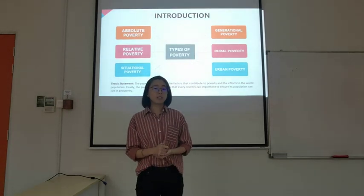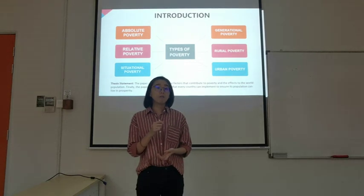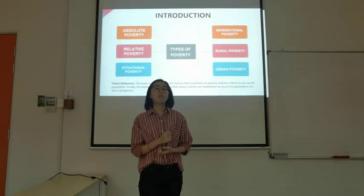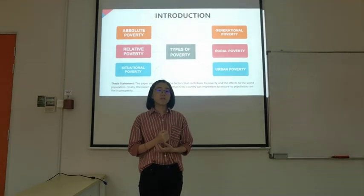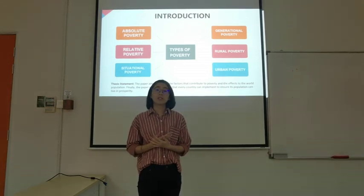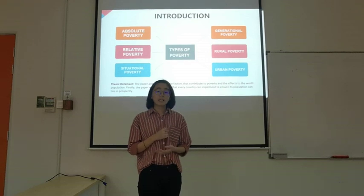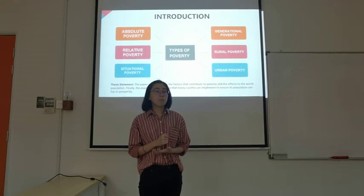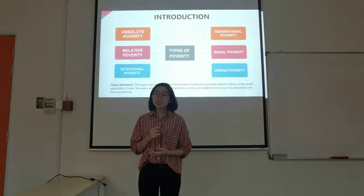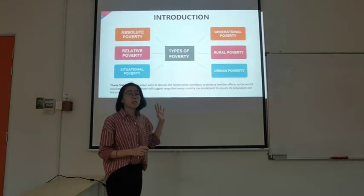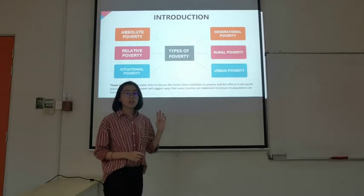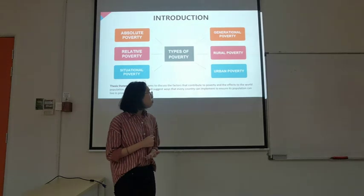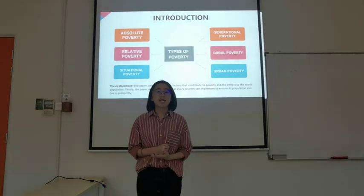Absolute poverty is not common in developed countries as it involves the shortage of basic needs of humans. Situational poverty is temporary, happening due to an unfavorable event. Generational poverty is poverty that is passed through from generation to generation. Rural poverty occurs in rural areas with lesser population. Conversely, urban poverty occurs in urban areas with larger populations. The thesis statement is that the paper aims to discuss the factors contributing to poverty and its effects on rural populations, and suggest ways countries can implement to ensure their populations can live in prosperity.